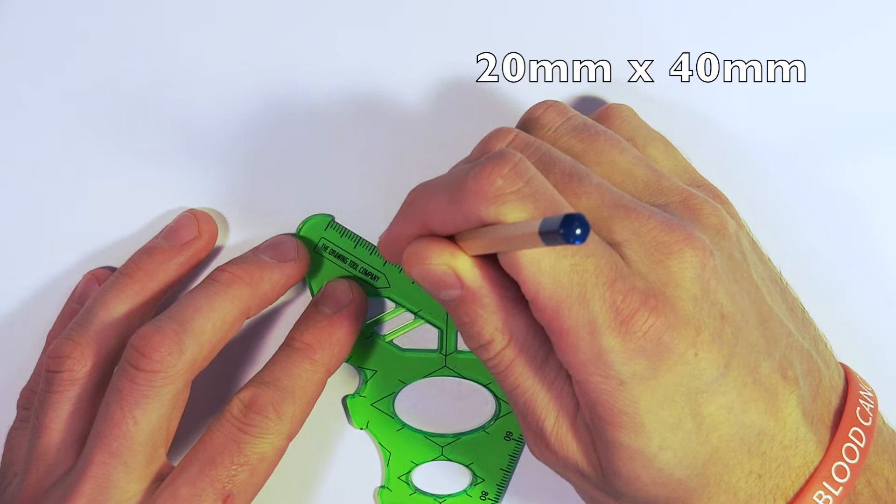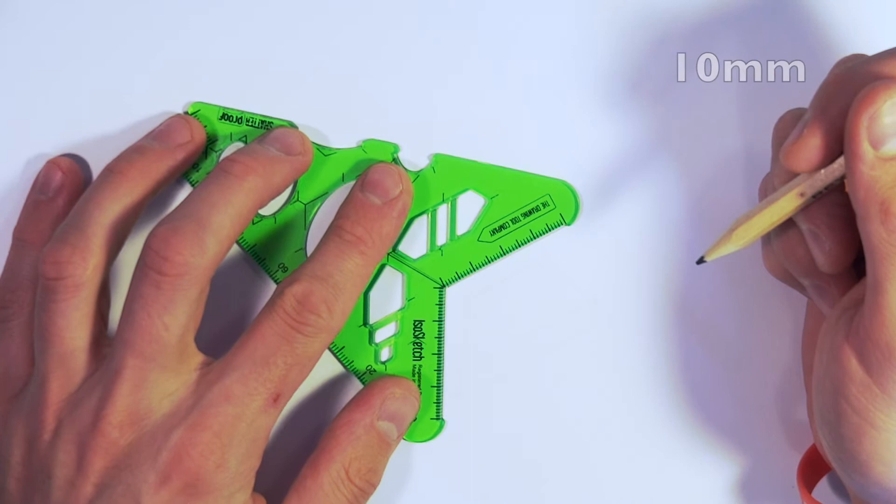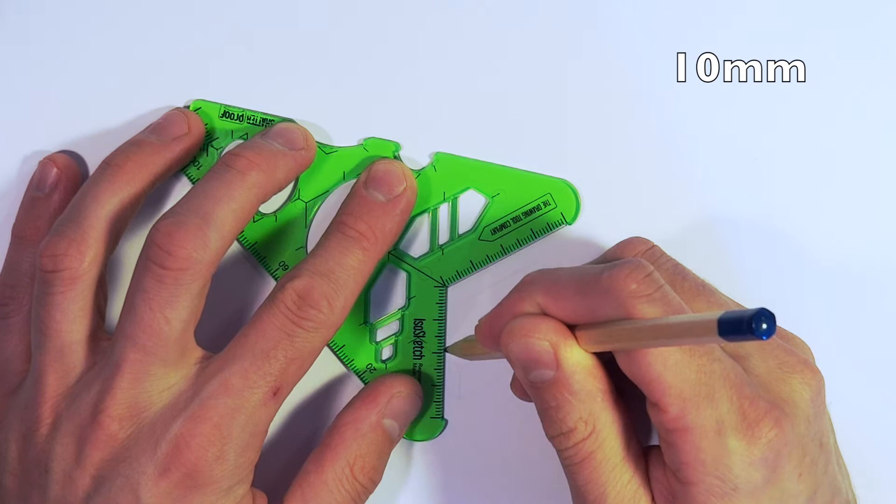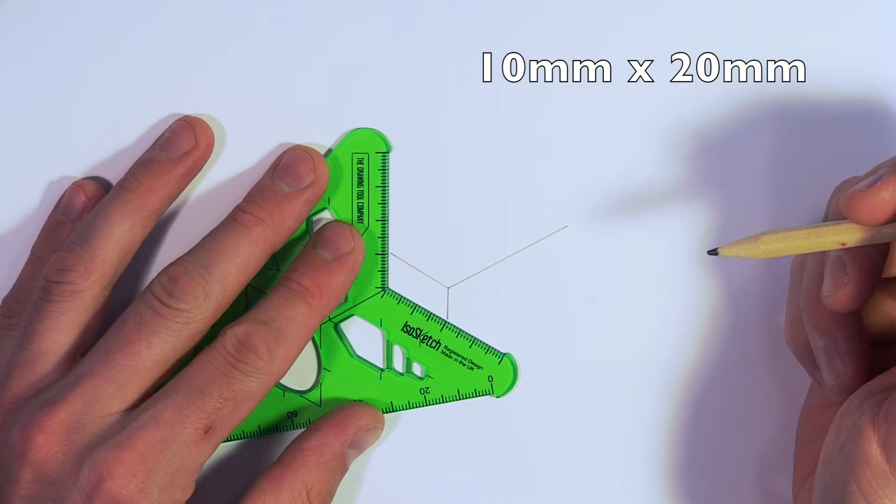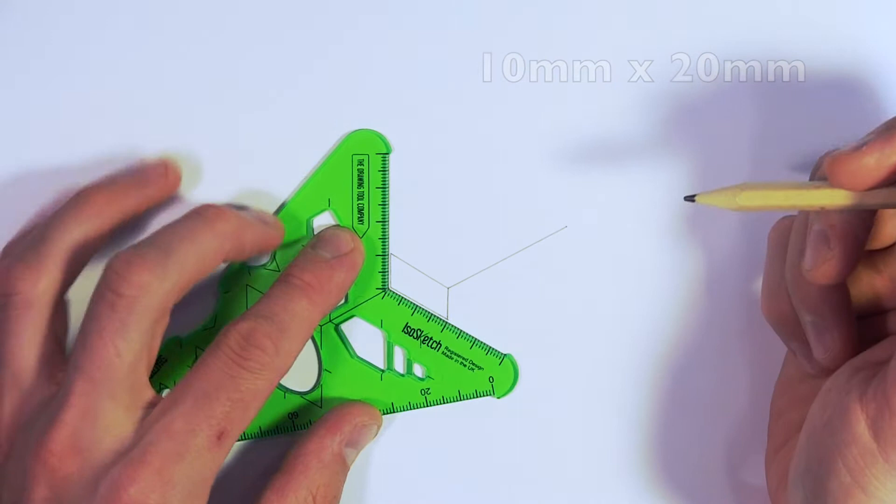So we're going to start off just using the measurements on the screen and drawing the back part of our chassis using the ISO sketch 3D drawing tool. You can see here that we're using small measurements: 40 millimeters which is 4 centimeters, 20 millimeters which is 2 centimeters, and 10 millimeters which is 1 centimeter.